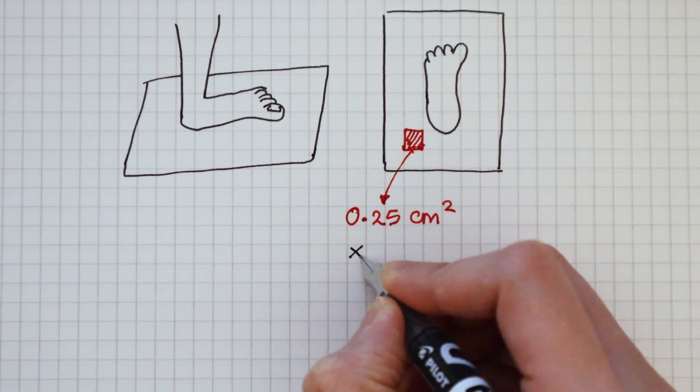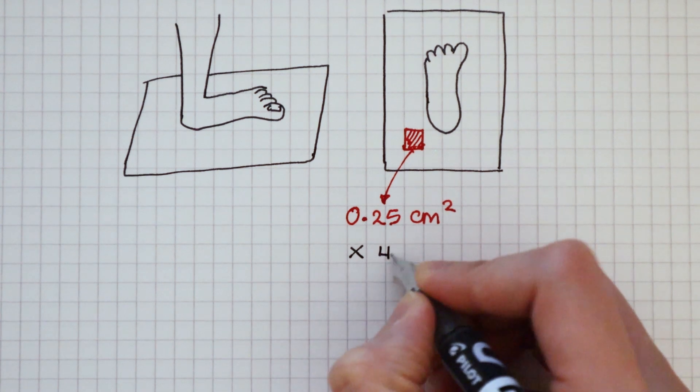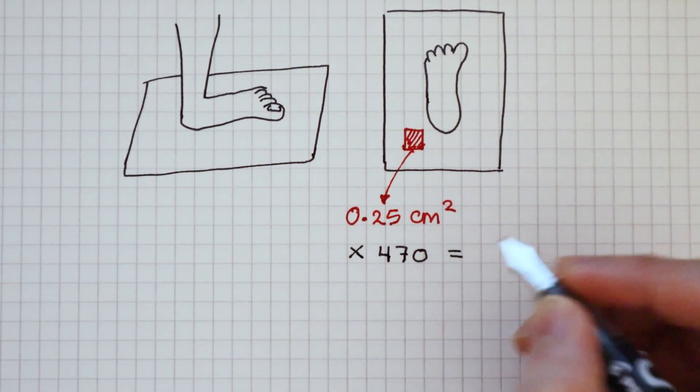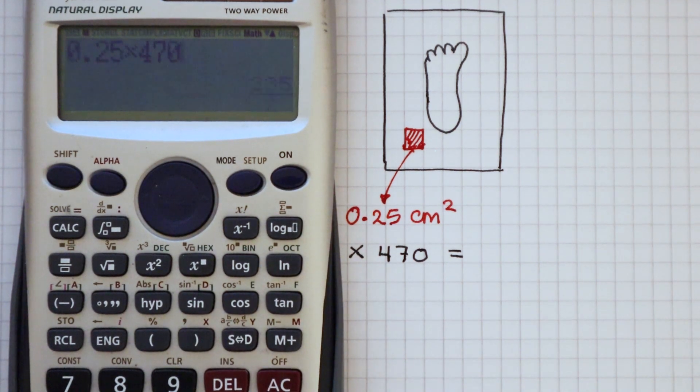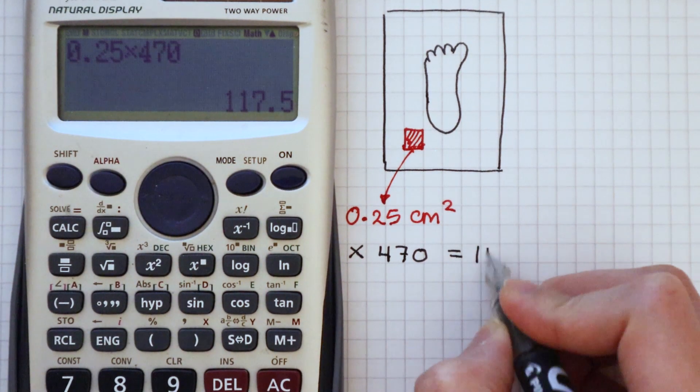Multiply the area of one square, 0.25, by 470. That gives an area of 117.5 centimeters squared.